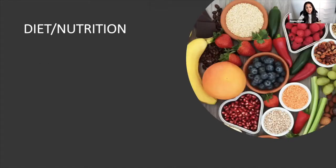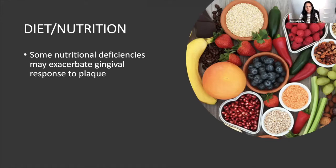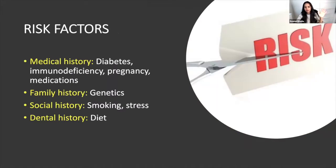Under dental history, diet and nutrition play a role. Various papers discuss vitamin D, vitamin C, magnesium, zinc — a carbohydrate-rich diet is not ideal for perio whereas a paleolithic diet is beneficial. I wouldn't get too bogged down in that though — as long as they're eating a good amount of fruit and veg, they're fine. We haven't even put the chair back yet, and look how much we've already gathered from history taking alone.